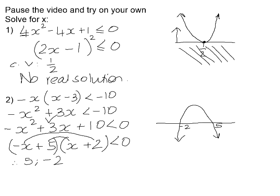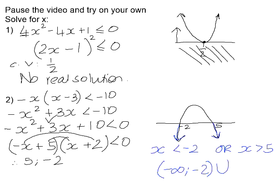We're looking for where the graph is less than zero — that's the two outer arms of the frowning parabola. That gives all values of x smaller than negative 2 or all values of x greater than 5. In interval notation, that is negative infinity to negative 2, in union with positive 5 to positive infinity, both with round brackets since the endpoints are not included.